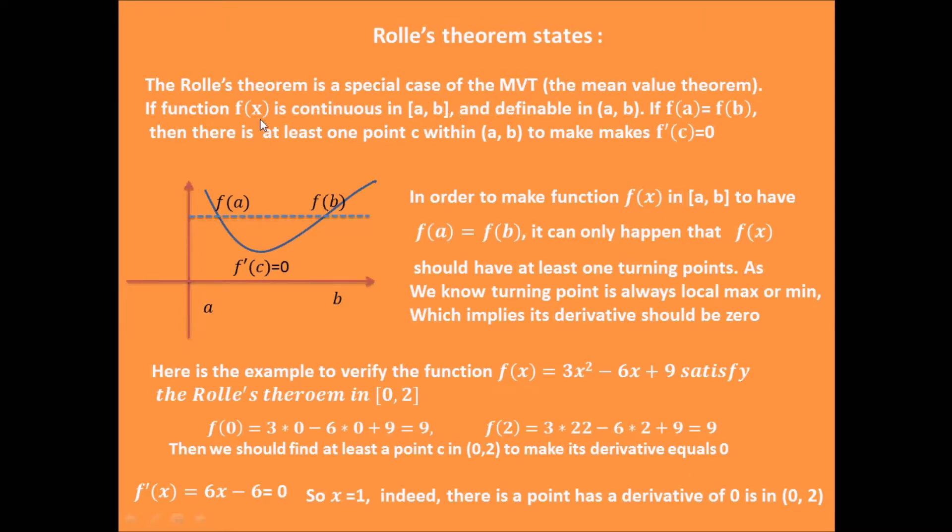If function f is continuous in [a, b] and also differentiable in [a, b], if f(a) equals f(b), then there is at least one point c which makes the derivative at c equals zero.